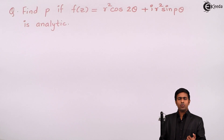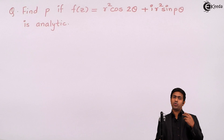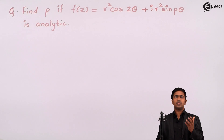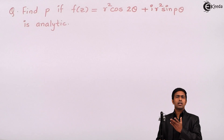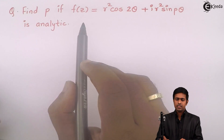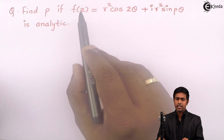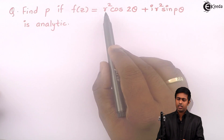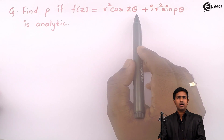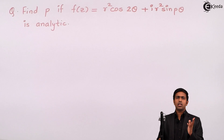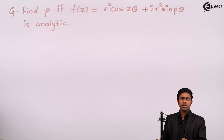To apply the Cauchy-Riemann equations, we have two types: one is in polar coordinates and one is in Cartesian coordinates. But since f of z is given in polar coordinate terms, that is in terms of r and theta, we will use the Cauchy-Riemann equations in polar coordinates.